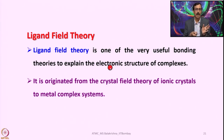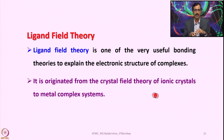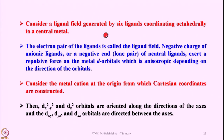Ligand field theory is one of the very useful bonding theories to explain the electronic structure of complexes. It originated from the crystal field theory of ionic crystals applied to metal complex systems, when the theory was originally developed to understand solid state chemistry. Consider a ligand field generated by 6 ligands coordinating octahedrally to a central metal atom.